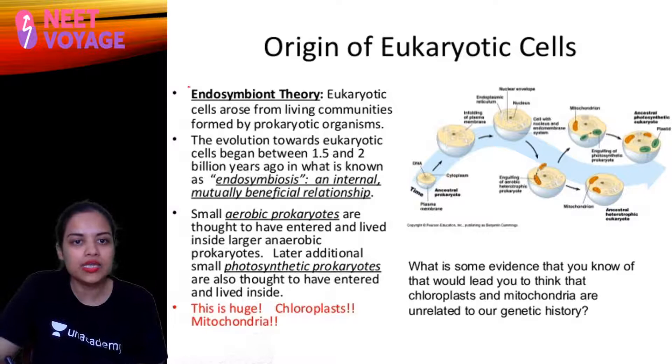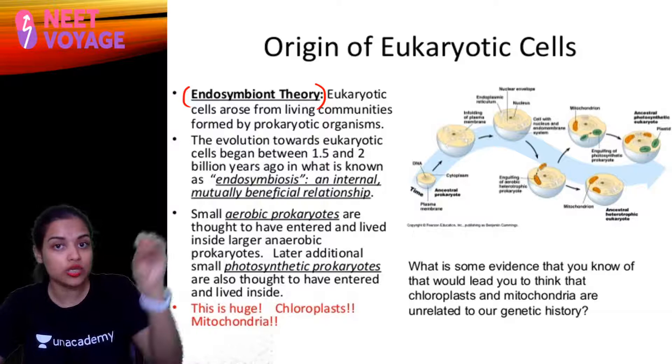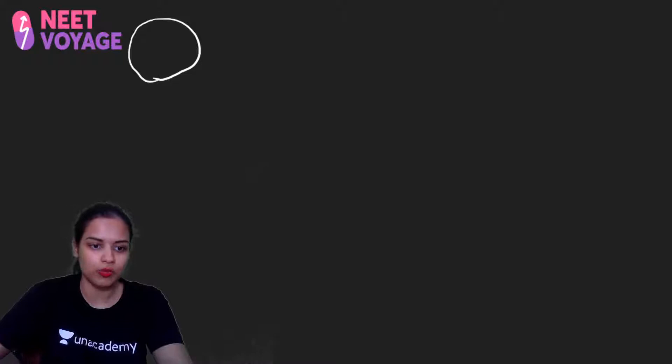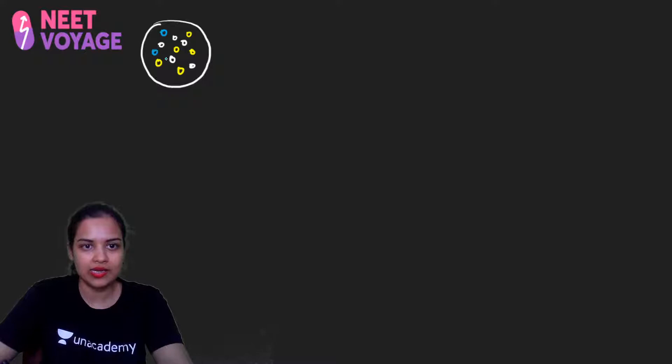Now, from these protobionts, how did we get eukaryotic and prokaryotic cells? We need to study the endosymbiotic theory. What is the evidence that biogeny actually came from protobionts? Let me draw a diagram. Suppose this is your protobiont — inside it you have different types of organic molecules: proteins, lipids, amino acids, enzymes, polysaccharides. So this is an aggregation of many organic molecules.